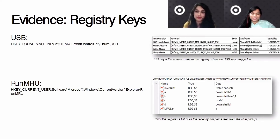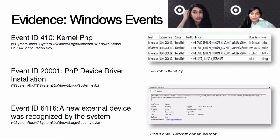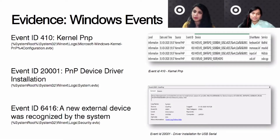Thank you, Payal. Now that we've looked at the registry keys, let's move on to Windows events. Windows events could be invaluable when it comes to investigation. We are going to look at events that will help us not only identify the USB itself, but also get the time the USB was connected to the host and who exactly connected it — answering the questions of what, when, and by whom. We have three event IDs: Event ID 410, Event ID 200001, and Event ID 6416.